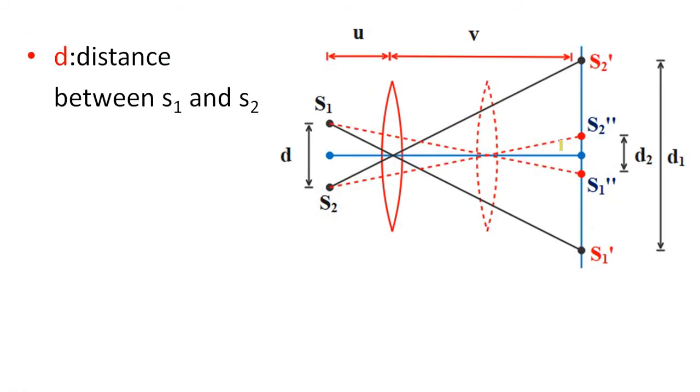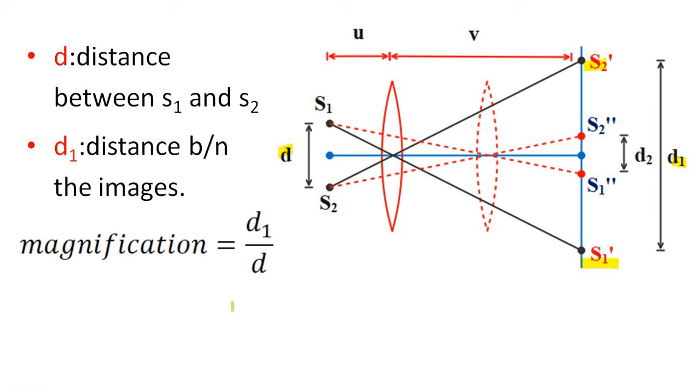D is the distance between S1 and S2. D1 is the distance between the pair of images. Then magnification equals D1 by D. By geometry, you can write D1 by D equals V by U. Let us consider it as equation 1.